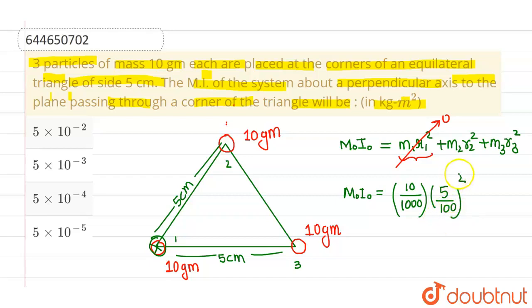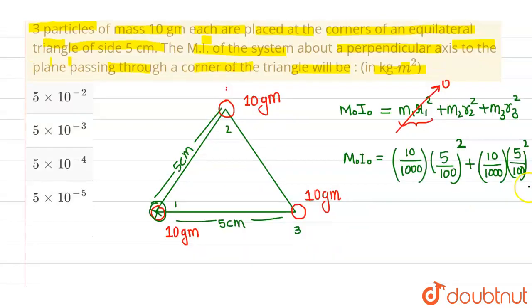Now why I am dividing it by 100? Because I am changing cm into m. Plus mass 3 is again 10, so I am converting it into kg. Similarly, distance is again 5, so this will be (5/100)².